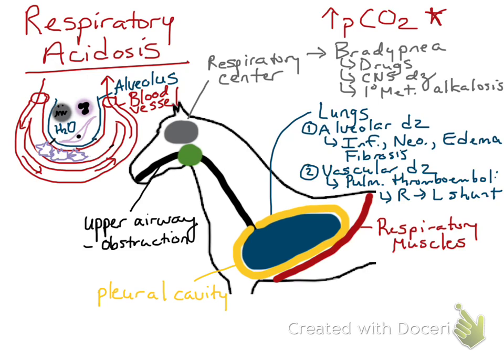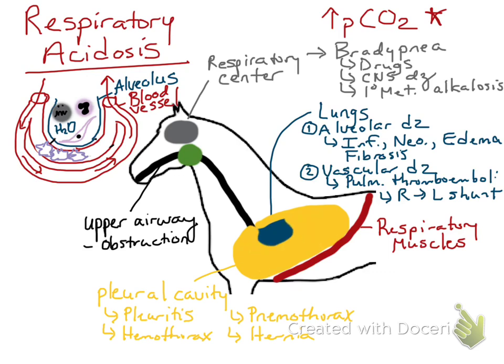Now going down to the pleural cavity. You can get a respiratory acidosis whenever there is something within the pleural cavity that's not supposed to be there. This is a dead space — it's very minute. If there's expansion of the pleural cavity with any substance — which would include inflammatory cells (pleuritis), blood with hemothorax, air with pneumothorax, or some sort of organs like liver or GI with a hernia — that essentially expands the pleural cavity and compresses the lungs. The lungs can't expand and relax like they normally should to allow for gas exchange.